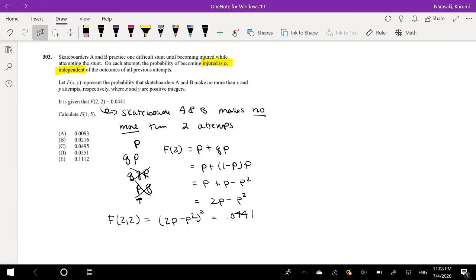Okay, so then this is like everything we need to find what P is, because we can take the square root of each side. So 2P minus P squared equals, let me tap it into my calculator. Okay, so it's equal to 0.21.